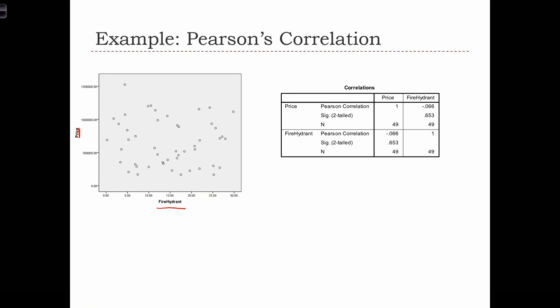So intuitively, we don't expect that the price of a house would really change depending on how many meters away the closest fire hydrant is. But we can compute a Pearson's R statistic, and in this case, the statistic is minus 0.066.